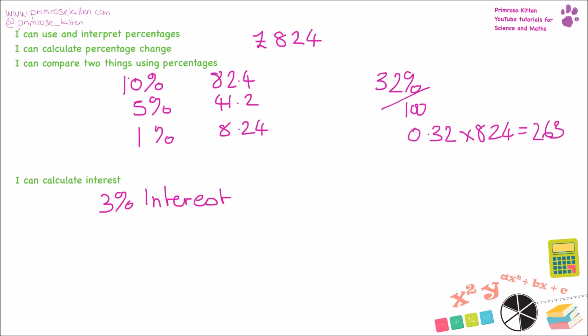Interest is just another way or another word for working out percentages. So if you leave your money in your bank, the bank will pay you interest on it. Unfortunately, not very much interest at the moment. It's going to be, say, 3% interest on 824 pounds. How much would you get after a year?